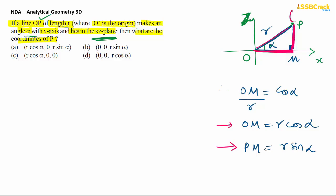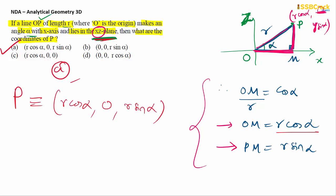OM represents a line on the x-axis and PM is parallel to the z-axis. So these coordinates R cos α and R sin α are the x and z coordinates of point P. But actually point P is in the 3D plane, whose y-coordinate will be zero, because this line lies in the x-z plane. So point P has coordinates: x-coordinate is R cos α, y-coordinate is zero because the line is lying in the x-z plane, and z-coordinate is R sin α, which is clearly option A.